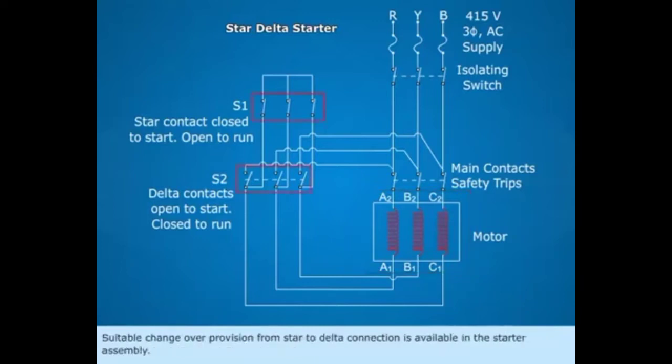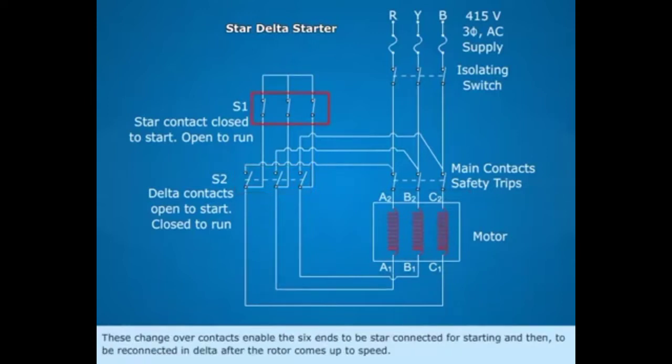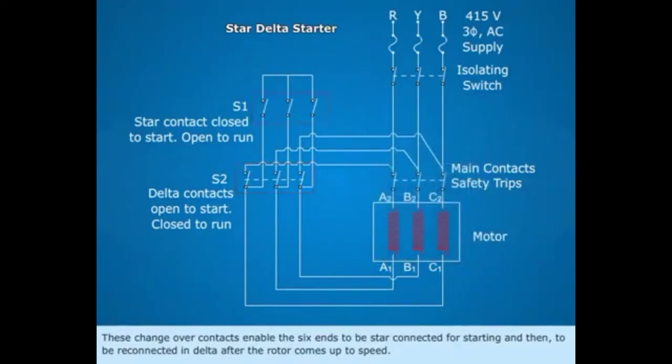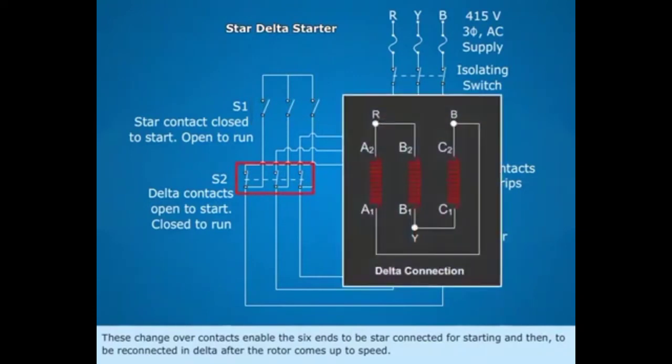Suitable changeover provision from star to delta connection is available in the starter assembly. These changeover contacts enable the six ends to be star connected for starting and then to be reconnected in delta after the rotor comes up to speed.